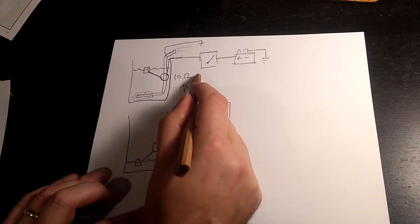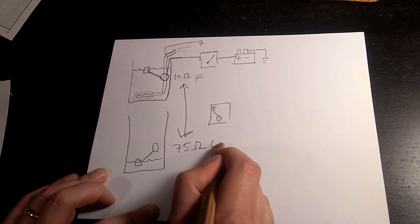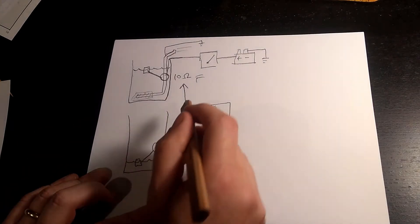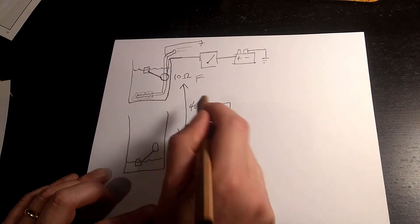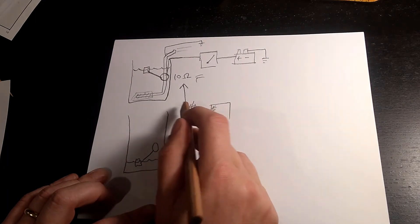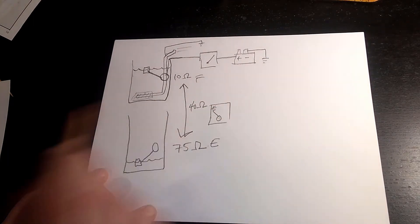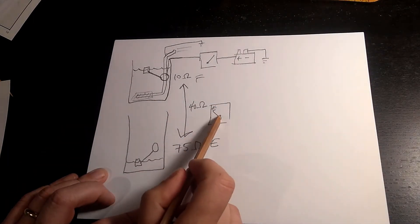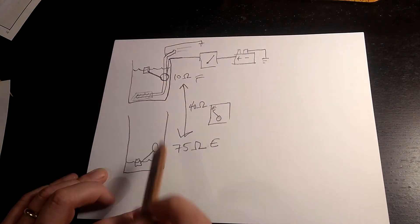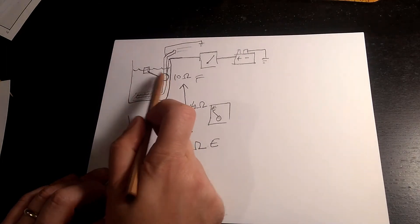So, at 10, it's full. At 75, it's empty. So, at about somewhere around 40, you're going to be at the halfway mark. That's all it is. It's just a very simple ohmmeter that's reading the resistance across this rheostat.